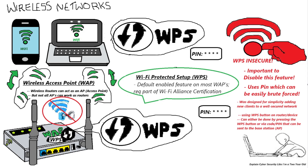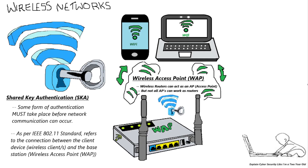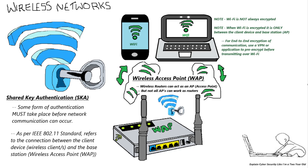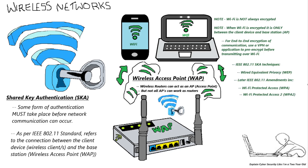That was a lot of information, so as a final summary: remember that Wi-Fi may not always be encrypted, but when it is, it is only between the client device and the base station — the wireless access point. Past this point, for end-to-end encryption over the internet, you would need a VPN or some application to pre-encrypt data before it is transmitted over Wi-Fi and then over the internet. We also discussed various IEEE 802.11 shared key authentication techniques and many amendments to this standard and its equivalent Wi-Fi network types.